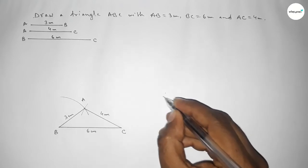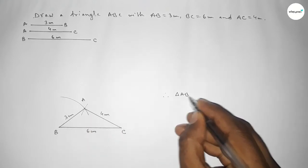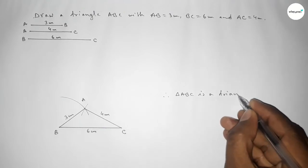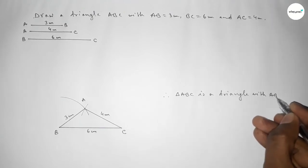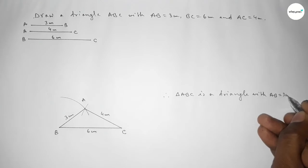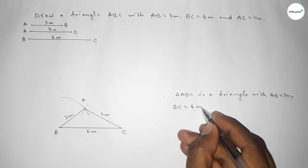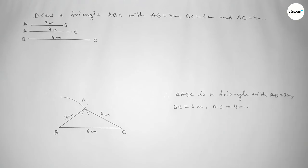Therefore, triangle ABC is constructed with AB equal to three centimeters, BC equal to six centimeters, and AC equal to four centimeters. That's all — thanks for watching. If this video is helpful to you, please share it with your friends.